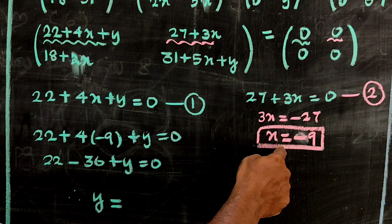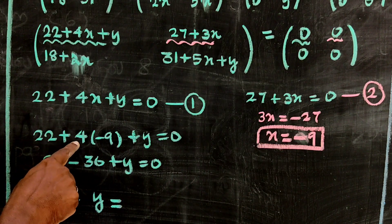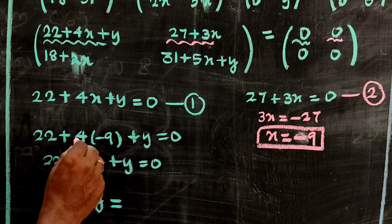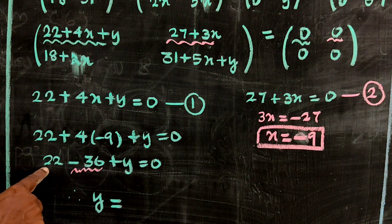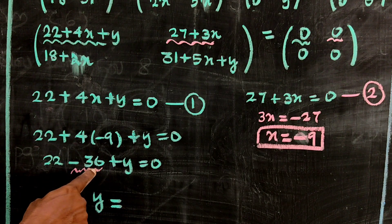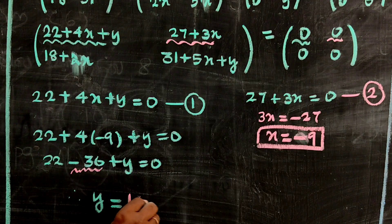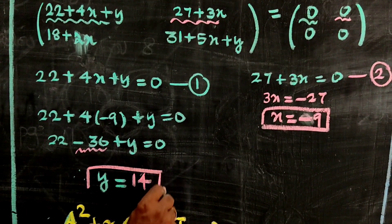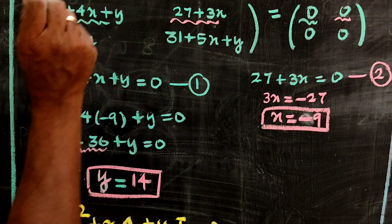Substituting x equals minus 9 in equation 1: 22 plus 4 times minus 9 plus y equals zero. 4 times minus 9 is minus 36. 22 minus 36 is minus 14, so y equals 14. Therefore x is equal to minus 9 and y is equal to 14.